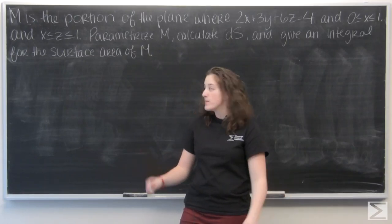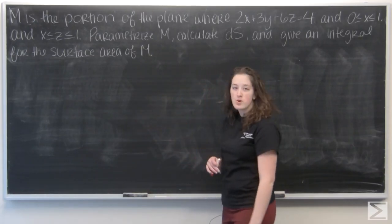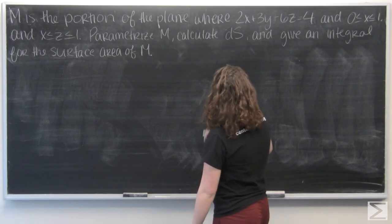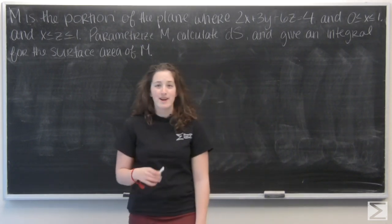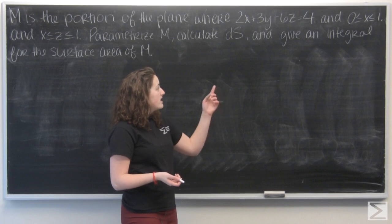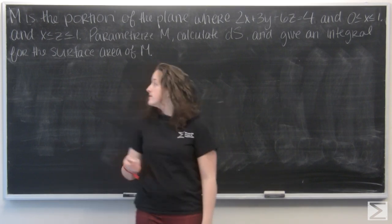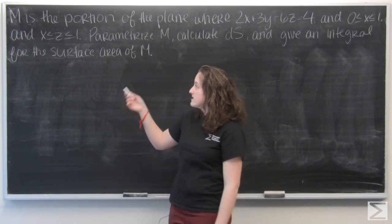Okay, let's take a look at this problem. So M is the portion of the plane where 2x plus 3y minus 6z equals 4, and x is between 0 and 1, z is between x and 1.